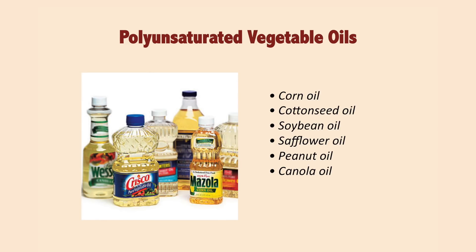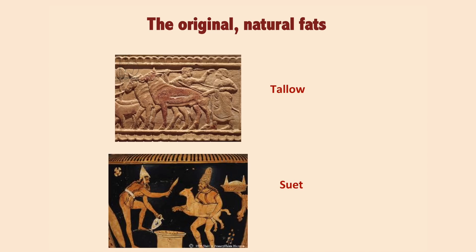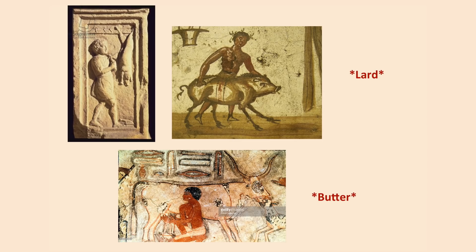These have to be contrasted with the original fats that Americans and Europeans cooked with before 1900. We universally cooked with fats from animals — tallow comes from beef, suet comes from pork, and then also lard, which is from pigs, and butter. Those are ancient fats, and that's what people cooked with exclusively.